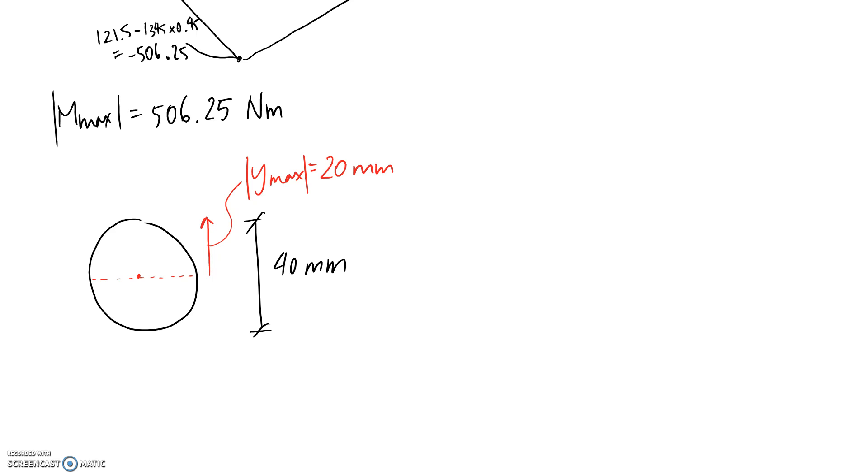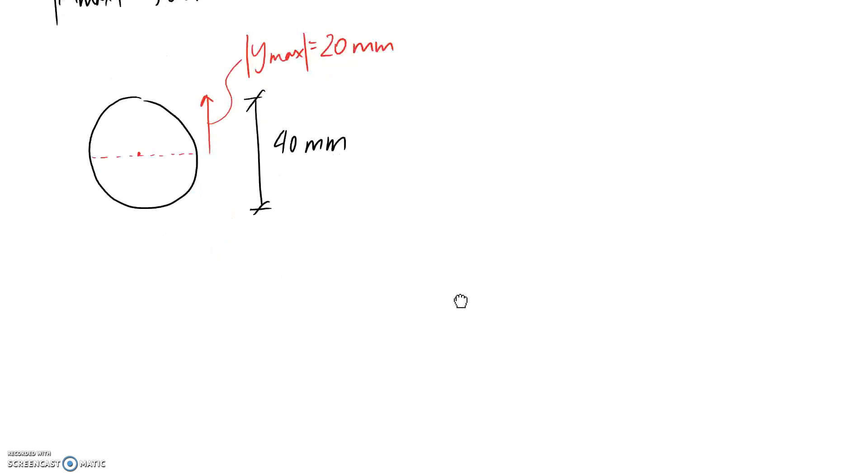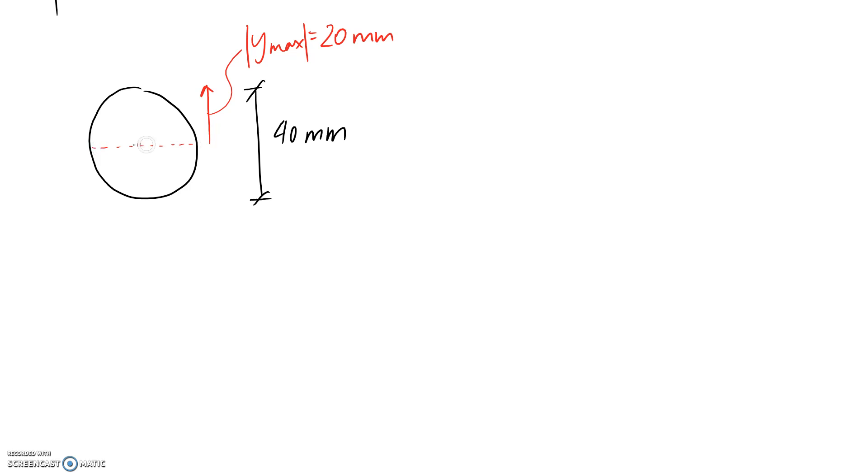Now what we need is the I value that corresponds to this cross-section. And looking about this axis, you can look this up in tables for a circle. It's pi on 4, R to the 4, where R is the radius of your circle. So pi on 4, radius is 20, so 20 to the 4th. And we end up with an I value for the circle of 125664. The units are millimeters to the 4th.